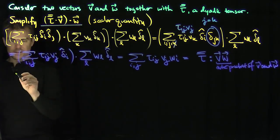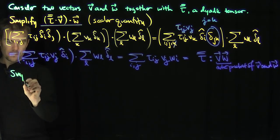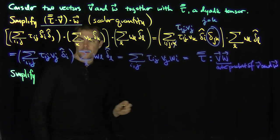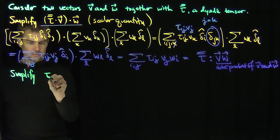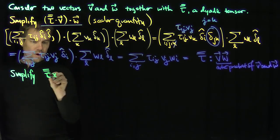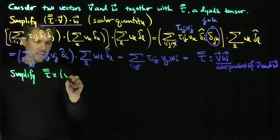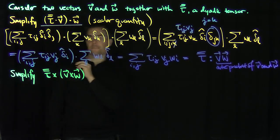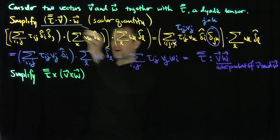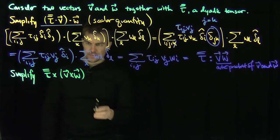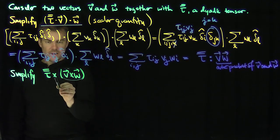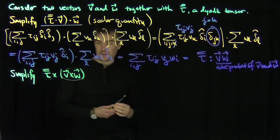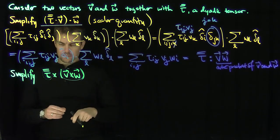Let's do another example. Here's the second example: let's simplify tau-bar-bar cross (v cross w). So instead of dot product relationships, now we do cross product relationships. Of course, v cross w is a vector, and a dyadic tensor cross a vector is going to be a dyadic tensor. So we're going to figure out what this looks like.